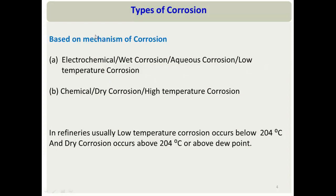The second type involves no electrolyte — it is a direct chemical reaction between the material and dry gases at high temperature. This is called chemical corrosion, dry corrosion, or high-temperature corrosion. In a refinery, electrochemical corrosion generally occurs below 200°C and dry corrosion occurs above 200°C.